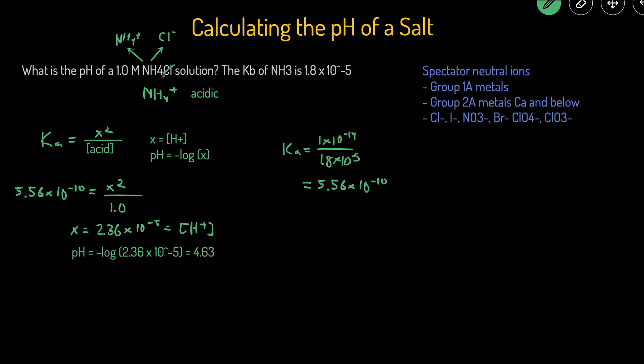But to summarize how you do these problems, if you're given a salt, again, an ionic compound, first start by getting rid of any of the spectator ions and figure out if you are left with an acidic solution or a basic solution. If you're left with an acidic solution, then use the Ka shortcut. If you're left with a basic solution, then use the Kb shortcut.